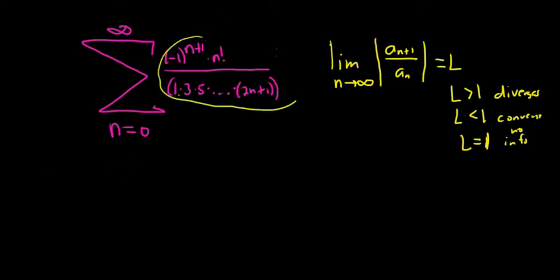This whole piece here, this is our a_n. So we have the limit as n goes to infinity, and we have to write a_{n+1} up top. I'm going to go ahead and replace all of the n's with n+1. This is going to be (-1)^{n+2} because when you put n+1 here you get n+2, then we get (n+1) factorial.